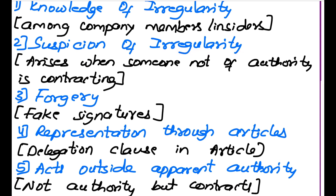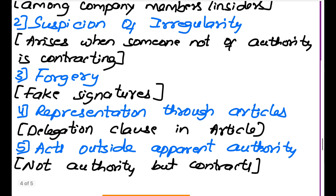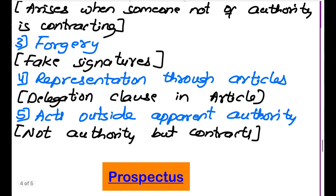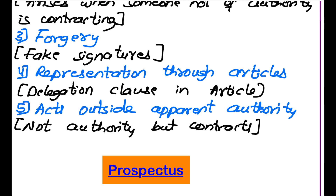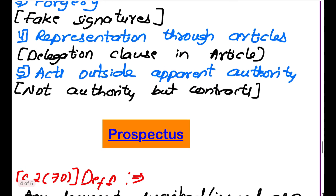The next exception is Suspicion of Irregularity, which arises when someone not of authority is entering into a contract. For example, if an outsider goes to an accountant and asks him to transfer all company property in his name, that will not be valid. The next exception is Forgery — if someone does a fake signature from the company and tries to enter into a contract, the Doctrine of Indoor Management does not apply. Next is Representation through Articles — if a delegation clause in the article delegates power to someone else, the doctrine does not attract. Similarly, if an act is outside apparent authority and someone not of authority enters into a contract, the company is not bound by it.